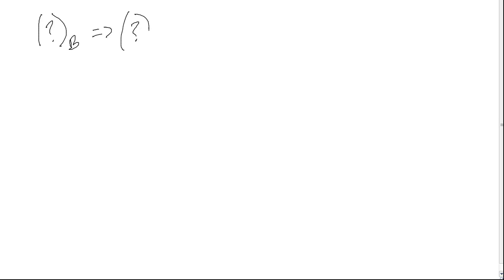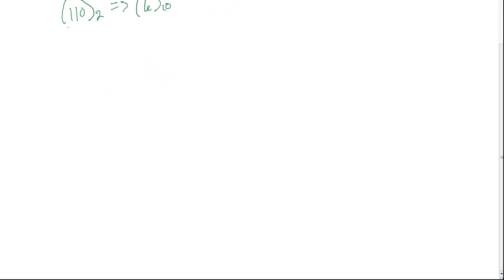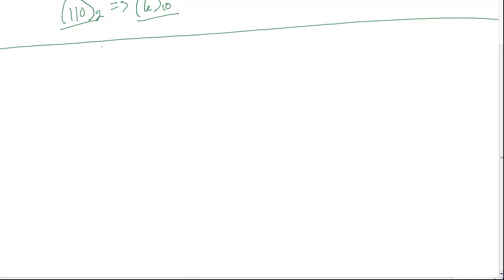Hey, what's up y'all? So in the last video, we converted an arbitrary number in some base into its equivalent in base 10. We did this using the Radix formula. So if I gave you a number, say 110 in base 2, we could convert that into 6 in base 10. We know how to go from some arbitrary base and convert it into base 10. Now in computer science or computer engineering, we generally only care about converting a number in base 2 into its equivalent form in base 10, and we can do this using the Radix formula.